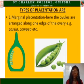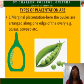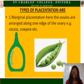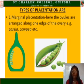Coming to the types of placentation, we have up to six different types. First, we have marginal placentation. In marginal placentation, the ovules are arranged along one edge of the ovary. Examples include cassia and cowpea.